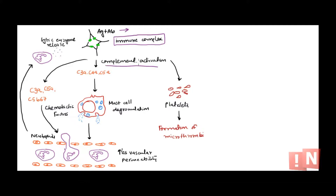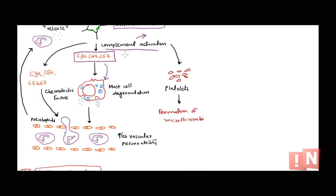Once the complement system is activated, there will be split products such as C3a, C4a, and C5a — these are the anaphylatoxins. These anaphylatoxins cause mast cells to undergo degranulation.